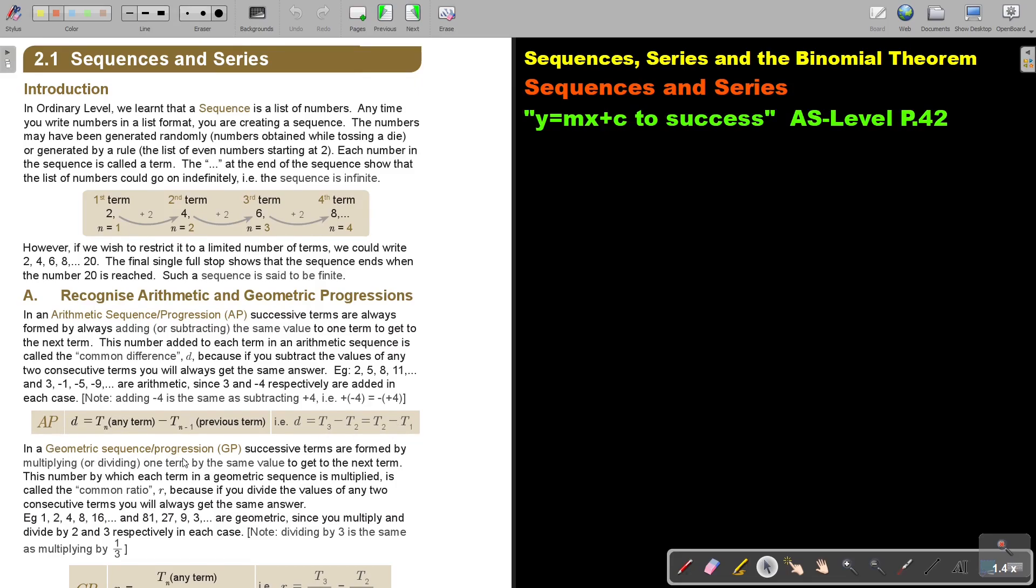In a geometric sequence or progression, successive terms are formed by multiplying or dividing one term by the same value to get the next term. This number by which each term in a geometrical sequence is multiplied is called the common ratio. So, this is now GP. R. Not D, but R. Because if you divide the value of any two consecutive terms, you will always get the same answer. So, 2 divided 1 is 2. 4 divided 2 is 2. 8 divided 4 is 2.